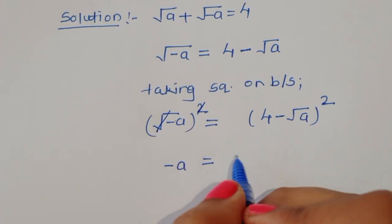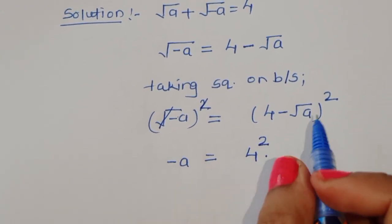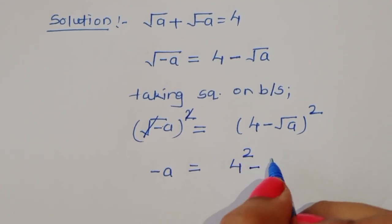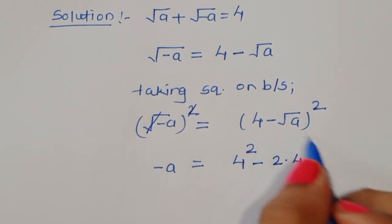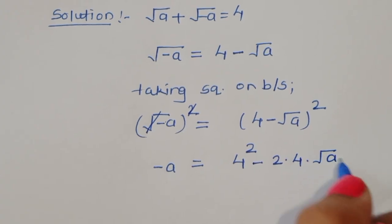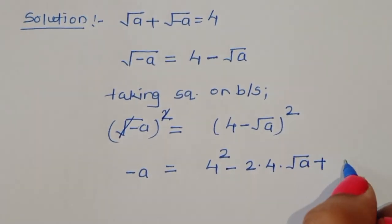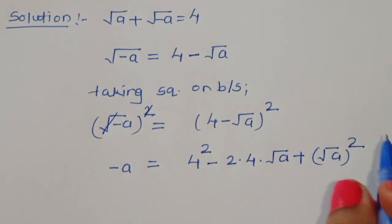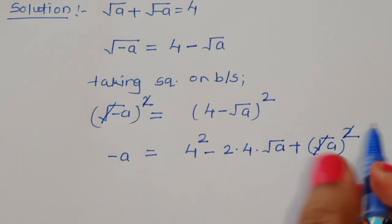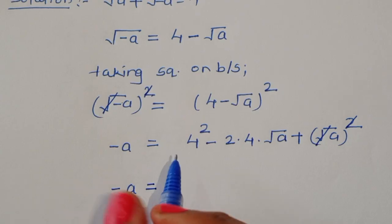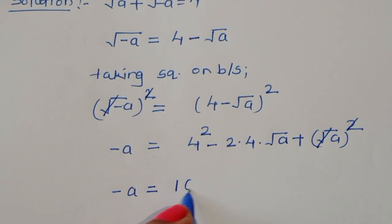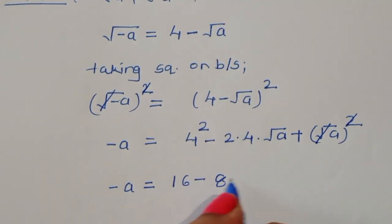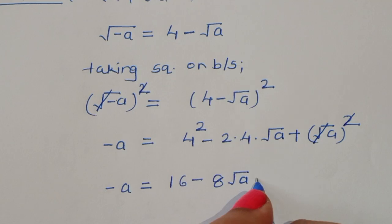(a − b)² = a² + b² − 2ab. So 4² = 16, minus 2 times 4 times √a, which is 8√a, plus (√a)² = a. So −a = 16 − 8√a + a.